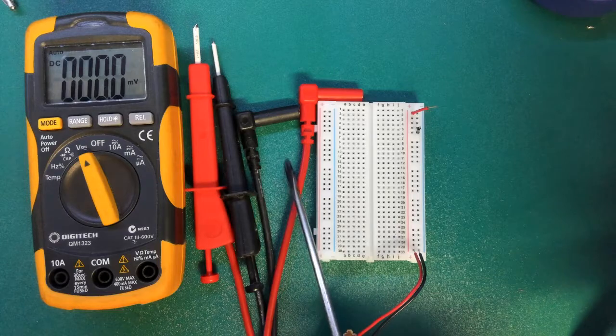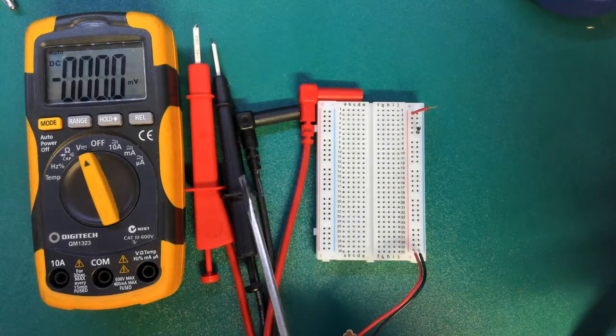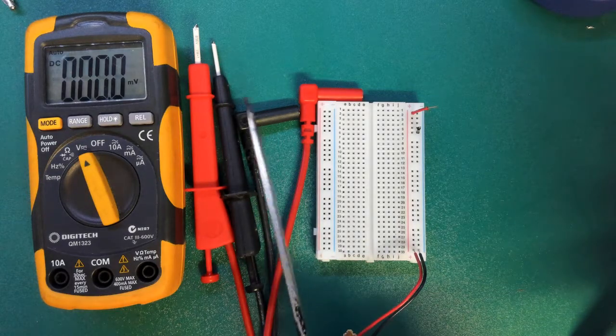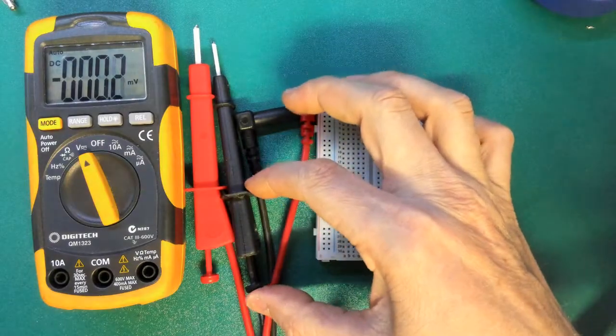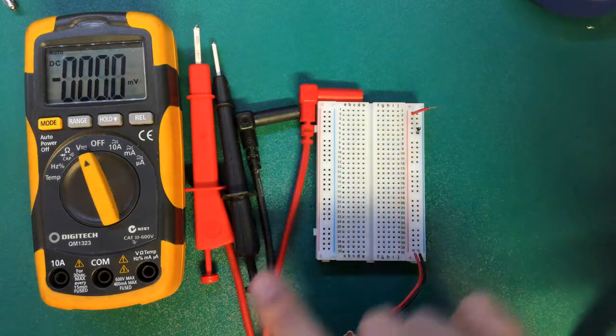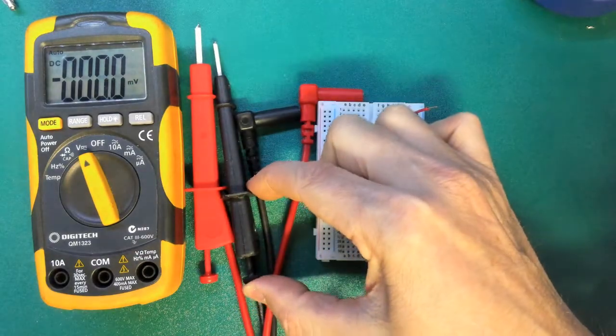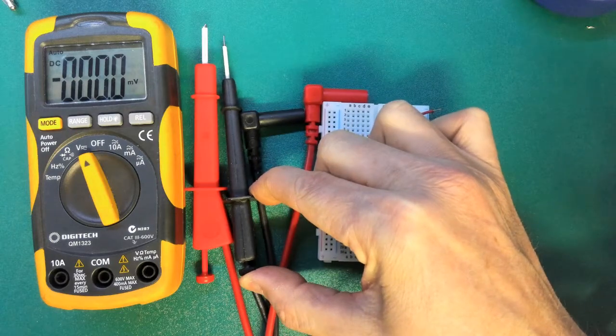Now this is another type of test probe. These are called parrot clips. Same deal as before, black and red. But if you see here it's got a little push button. So if I push that down you can see there's a little extendy bit.